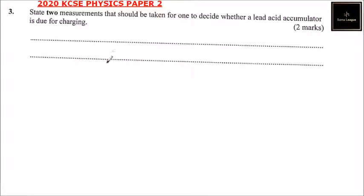Question number three: State two measurements that should be taken for one to decide whether a lead acid accumulator is due for charging. You get two marks. So, lead acid accumulator.